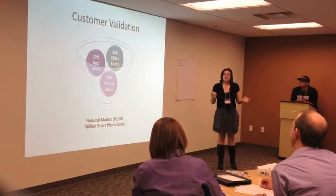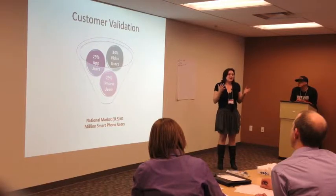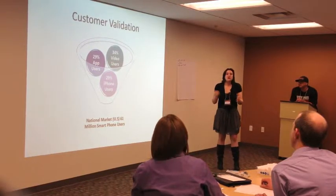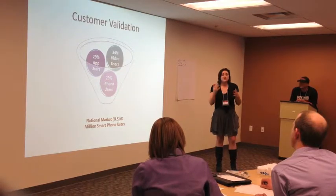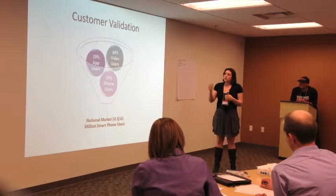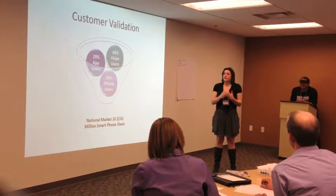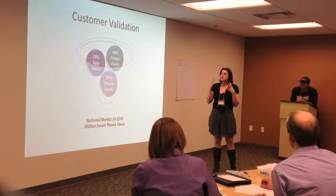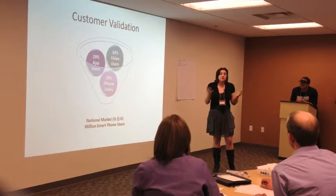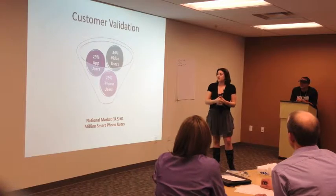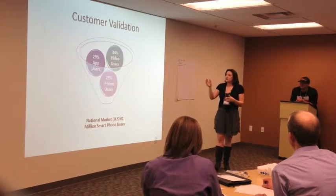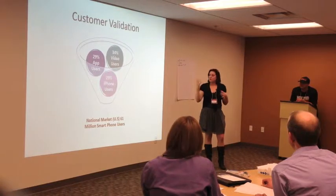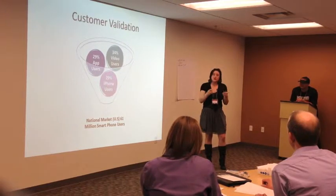Our customer validation — where did we find that actual people are interested in this? First, we looked at the amount of people that have iPhones, which will be our first platform. 29% of all cell phone users have iPhones, and 29% of smartphone users use apps. People with smartphones have cameras and video makers, and 34% of smartphone users use their video player.